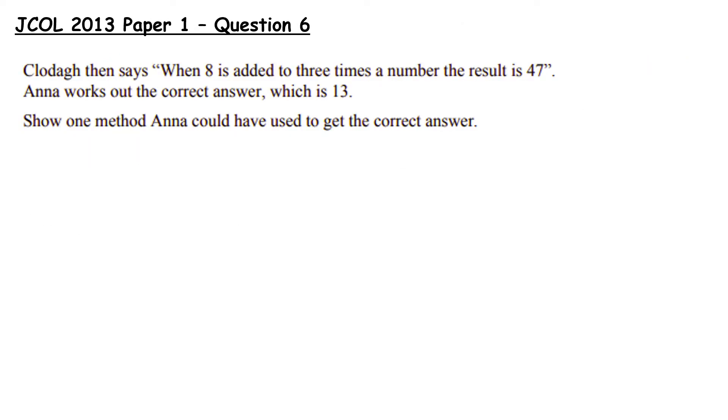This is from the junior certificate ordinary level 2013 paper 1. Clodagh says when 8 is added to 3 times a number the result is 47. Anna worked out the correct answer which is 13. Show one method Anna could have used to get the correct answer. I'm going to focus on creating an algebraic equation here in order to solve it. When we're translating from word problems to the maths itself it's similar to translating between languages.